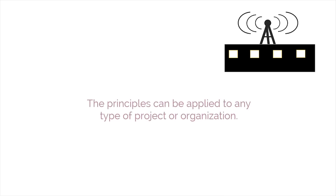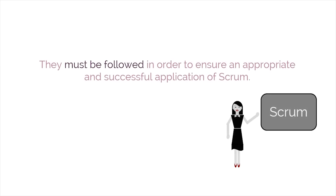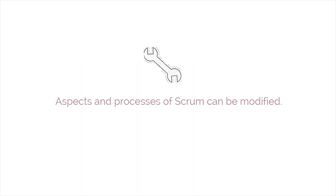The principles of Scrum can be applied to any type of project or organization. They must be followed in order to ensure an appropriate and successful application of Scrum. Within the scope of these principles, the aspects and processes of Scrum can still be modified to meet the requirements of a specific project or of the organization using them.